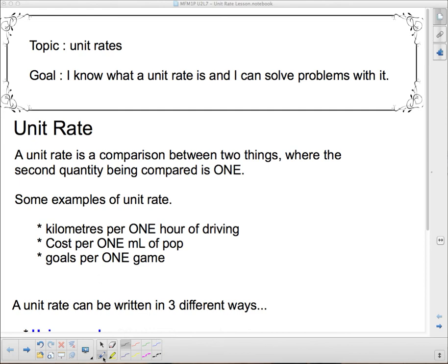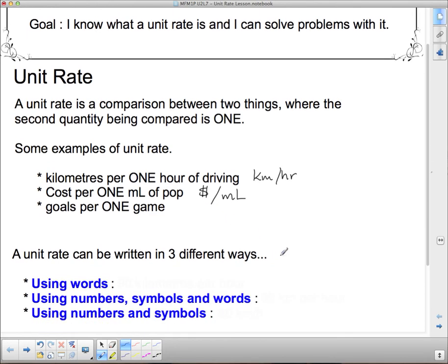Usually we don't put the word one in there. So when we're talking about it, we would say kilometers per hour, or cost per milliliter instead of per one milliliter, or goals per game.